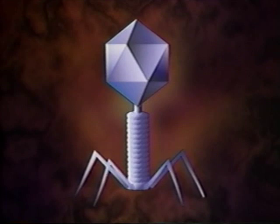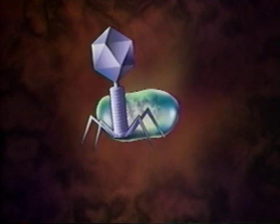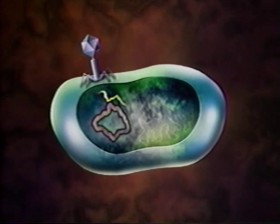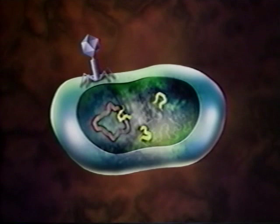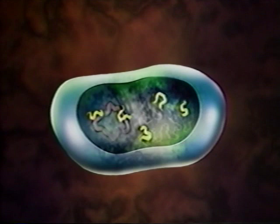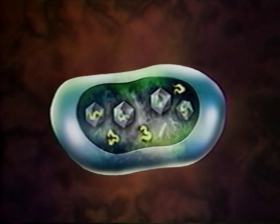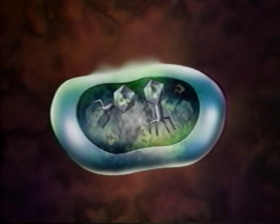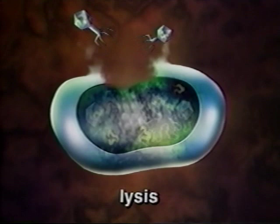How viruses reproduce varies somewhat with different kinds of viruses. Take the bacteriophage, a virus that invades bacteria. When a bacteriophage comes in contact with the right kind of bacterium, it sticks to its wall. Then, like a syringe, it injects its DNA into the bacterial cell. The viral DNA then takes command — it orders the bacterium's cellular machinery to manufacture the different parts of new viruses. These parts are assembled in just the right sequence, much like the parts of an automobile are put together on an assembly line. The new virus particles then burst out of the bacterium by rupturing its cell wall. This rupturing of a cell is called lysis. It results in the cell's death.